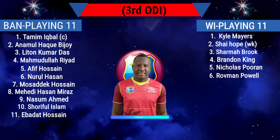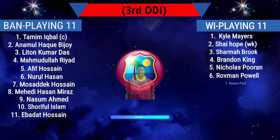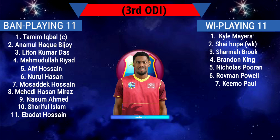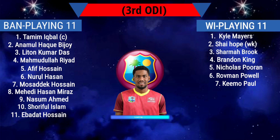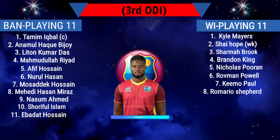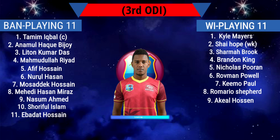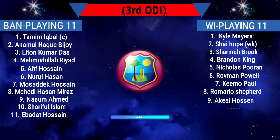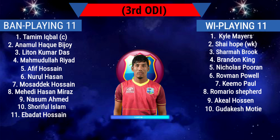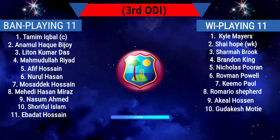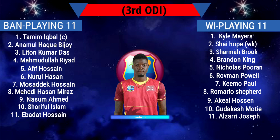Number 6: Rovman Powell. Number 7: Keemo Paul. Number 8: Romario Shepherd. Number 9: Akeal Hosein. Number 10: Gudakesh Motie. Number 11: Alzarri Joseph.